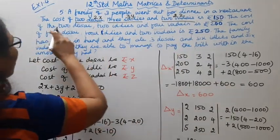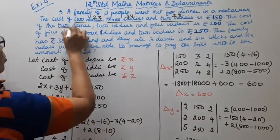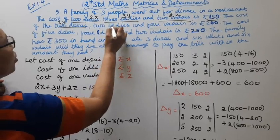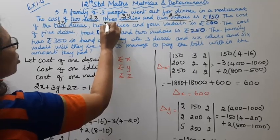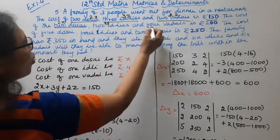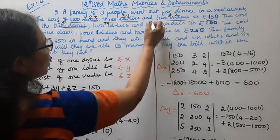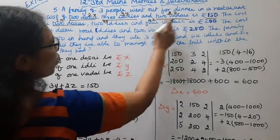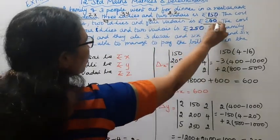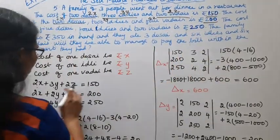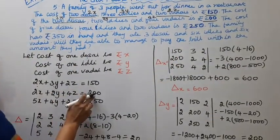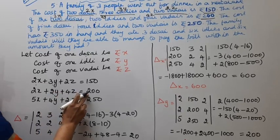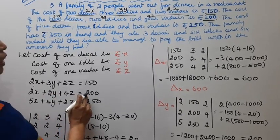The cost of 2 dosai is 2x, 2 idlis is 2y, and 4 vadais is 4z. So the second equation is: 2x + 2y + 4z = 200.